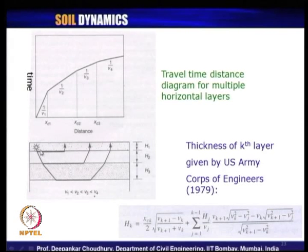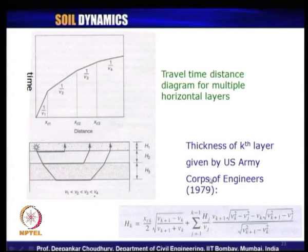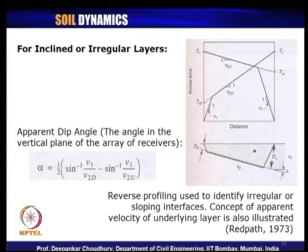This is the pictorial representation of how refraction takes place between the first and second layer boundary, giving us velocities v1, v2, v3, v4, and so on. One assumption is that v1 < v2 < v3 < v4. If this is not so, the test will give erroneous results — these are the few drawbacks to remember. The thickness of any kth layer, as expressed by the US Army Corps of Engineers, can be obtained using the corresponding lower and upper layer velocities.